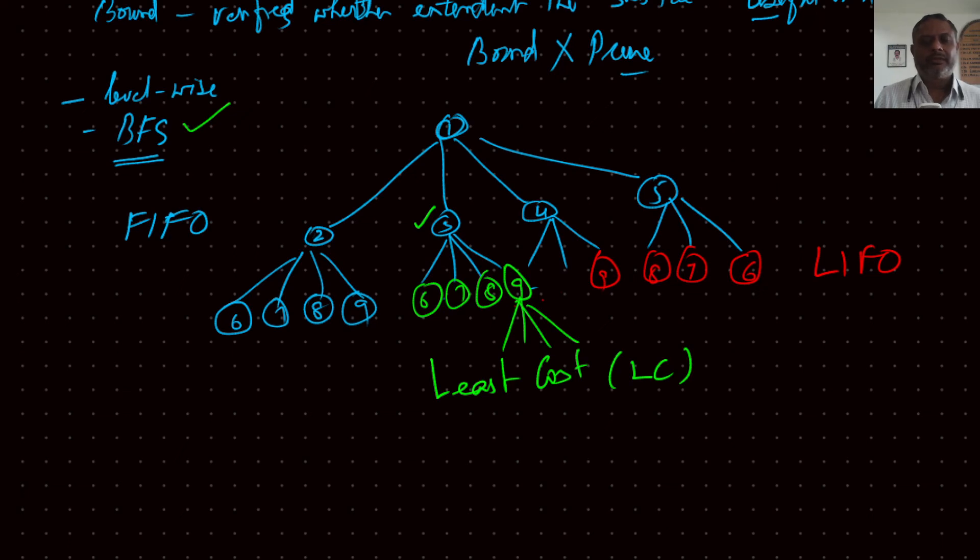So once, say if you say least cost, then after three is expanded, it doesn't look at least cost among six, seven, eight, nine. It will look in two, six, seven, eight, nine, four, and five, all these, and then decide whichever is having least cost and that will be extended. So if five is found to have least cost, then from five it starts. So after nine, this will become ten, eleven, twelve, and so on.